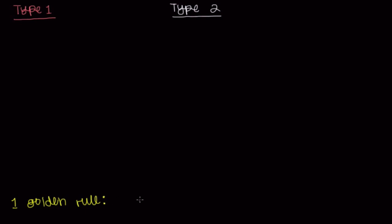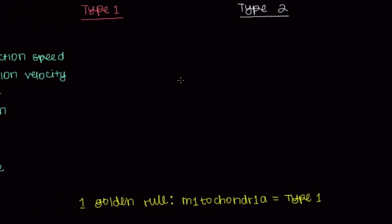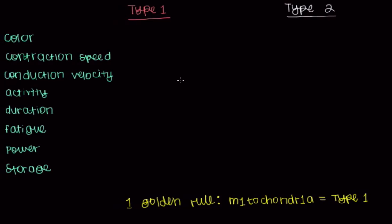The golden rule for this table is that mitochondria are present in greater quantities in your type 1 muscle fibers. So mitochondria are more prevalent in type 1 muscle fibers than in type 2. And just based on that knowledge alone, we should be able to go through and fill out this table.